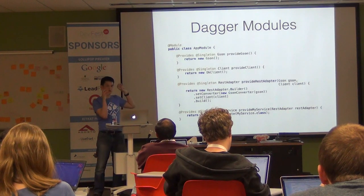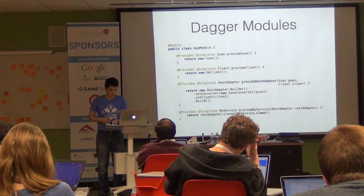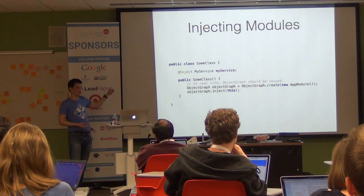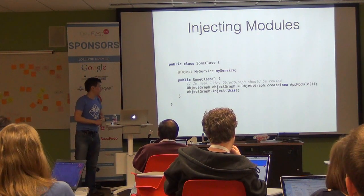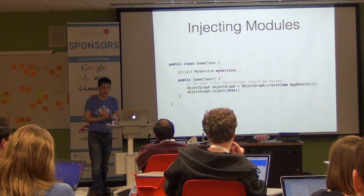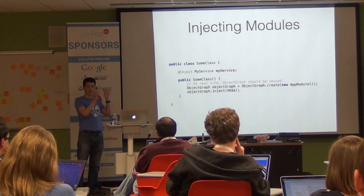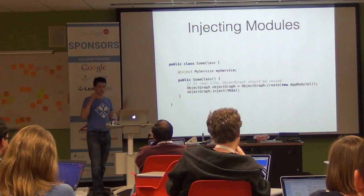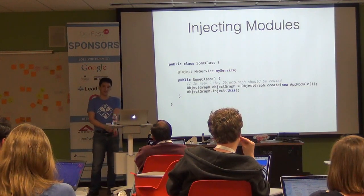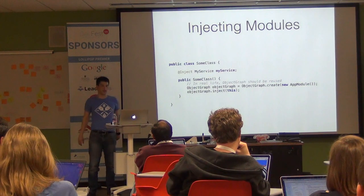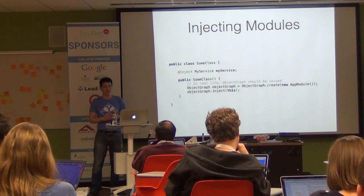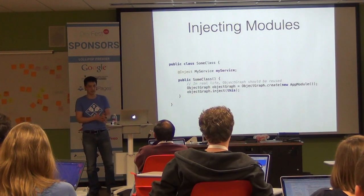Now I have a module for managing dependencies. To inject it into a class, I annotate a field with @Inject. Then there are two steps: create the ObjectGraph from your module using ObjectGraph.create(), and then call objectGraph.inject(this). In real life, you catch the ObjectGraph at your Application instance — that's your one singleton. Dagger also does compile-time checks to make sure your code actually makes sense, which is great because compile-time checks save me from myself.